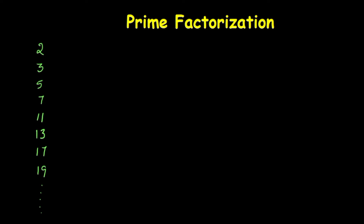Prime factorization means the given number should be divided by using these prime numbers. As one example, I'm going to take 120. How do we divide 120 into its prime factors? Now I'm going to explain by using the factor tree method.